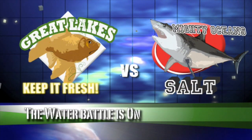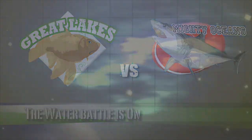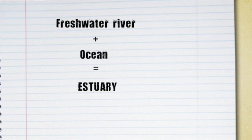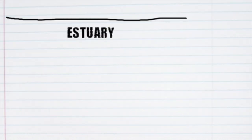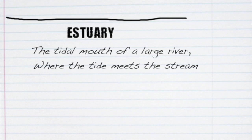It does look like fun, but not exactly accurate. The transition zone between, for example, the freshwater river and the ocean is called an estuary. An estuary is defined as the tidal mouth of a large river, where the tide meets the stream.